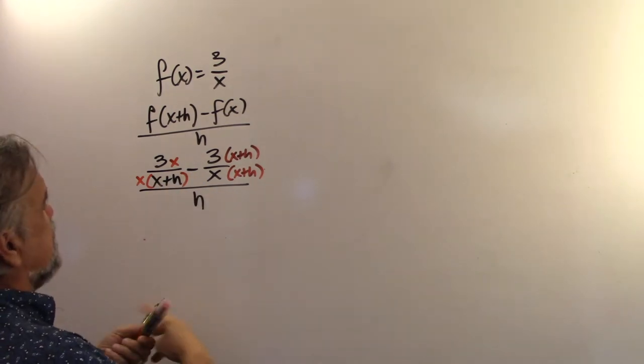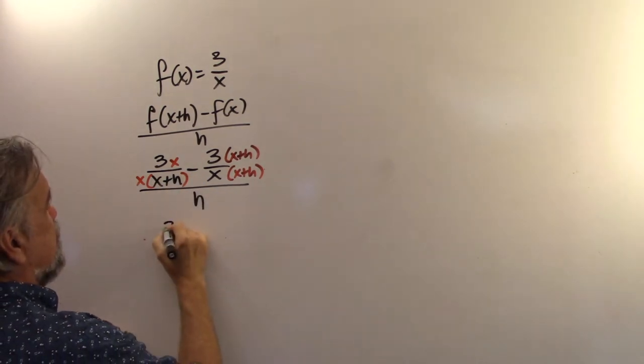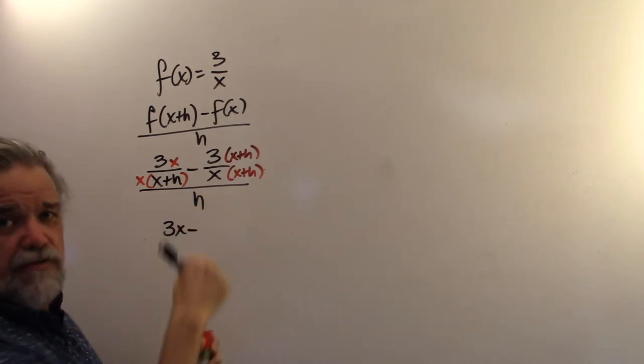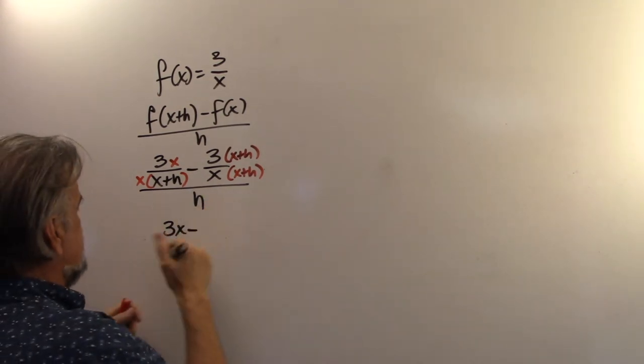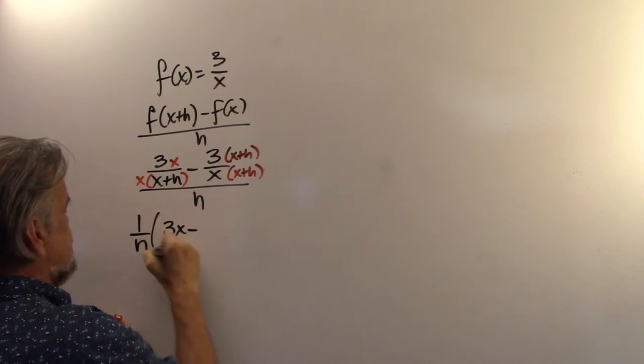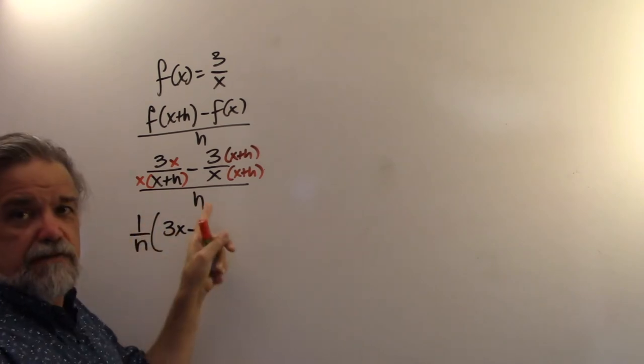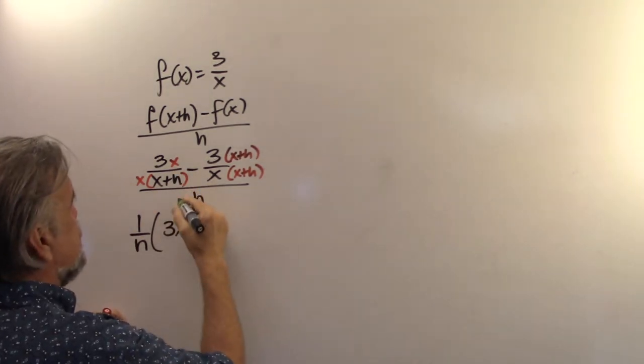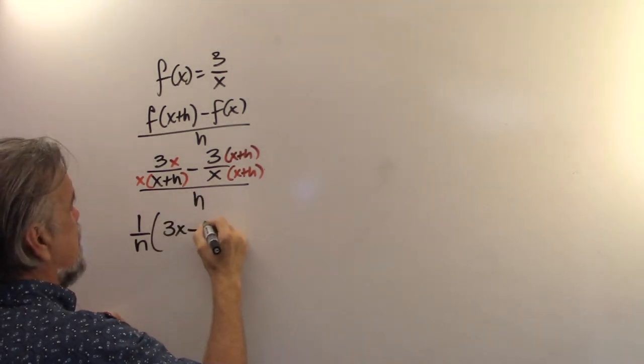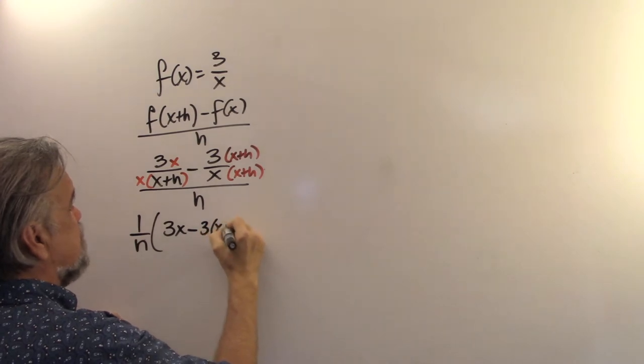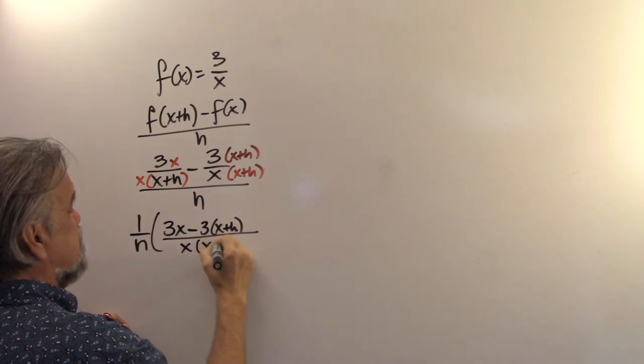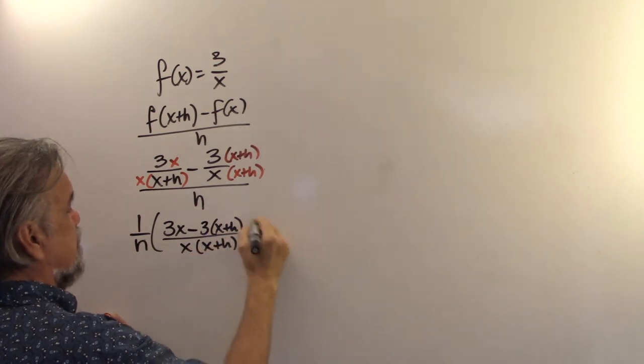And so now what I'm going to get is 3x minus... And actually, this h right here, let me just rename this 1 over h times this stuff. Dividing by h and multiplying by 1 over h is the same thing. So now I've got 3x minus 3 times x plus h over x times x plus h.